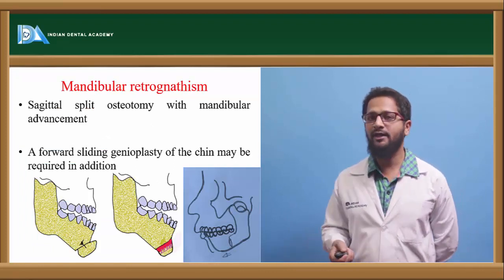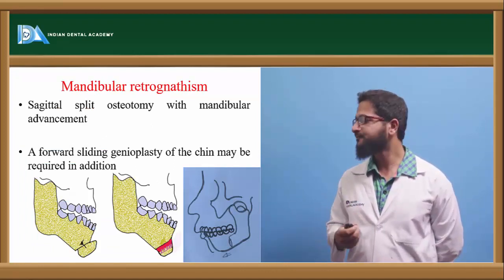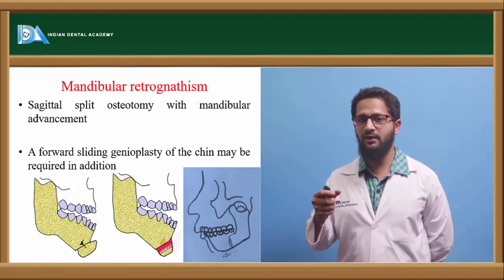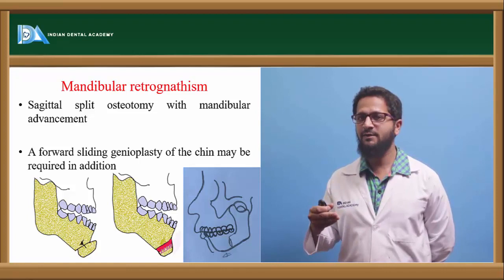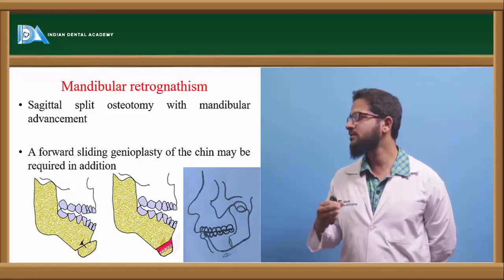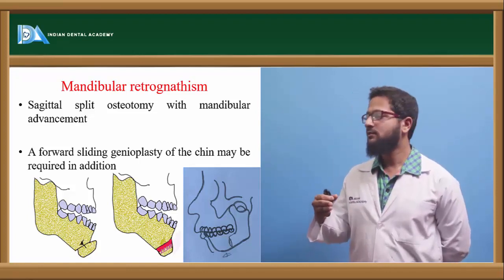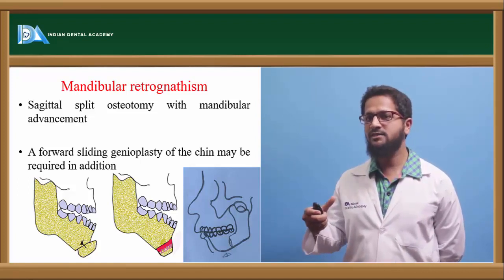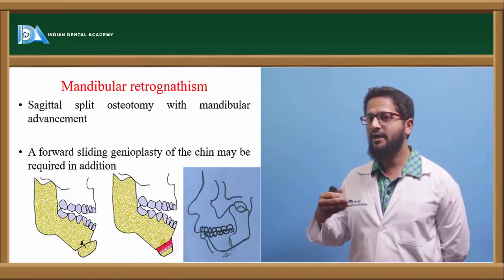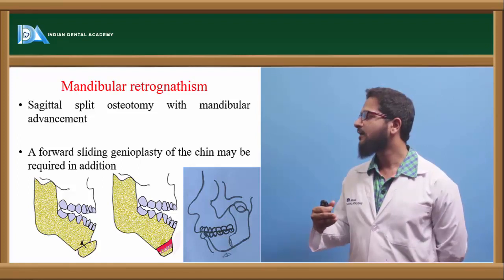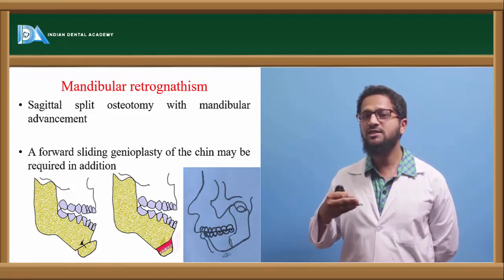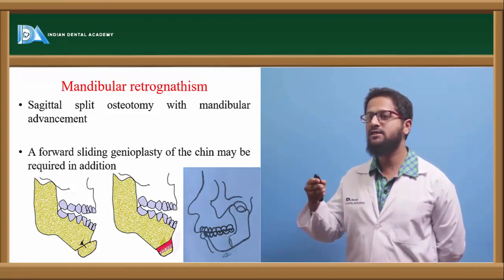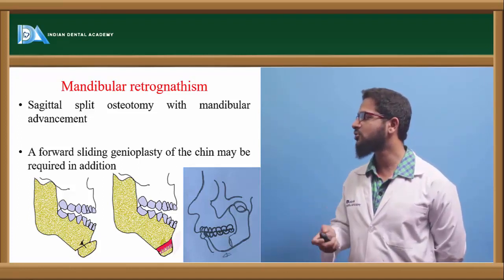In case of mandibular retrognathism, such as class II cases, if the fault is within the mandibular body — meaning the length of the mandibular body is deficient — sagittal split osteotomy is done with advancement and splinting. If the body length is normal but the chin is positioned backwards, a sliding advancement genioplasty is done and the chin is positioned properly.